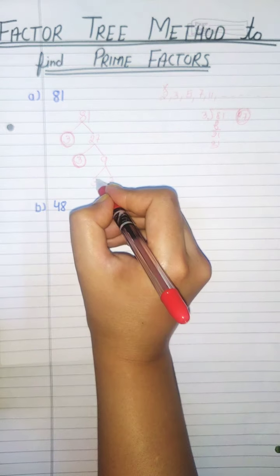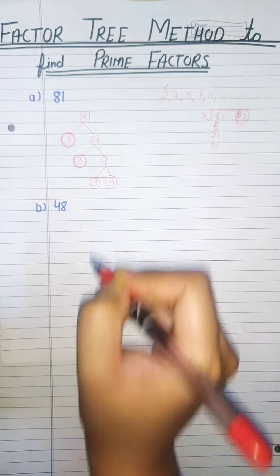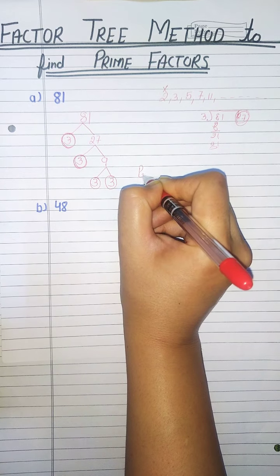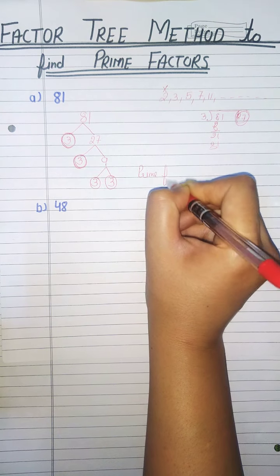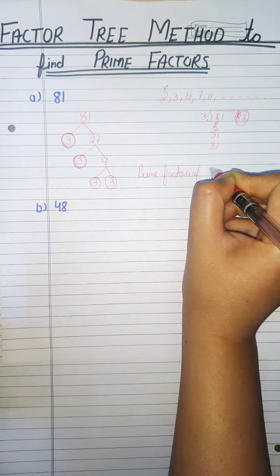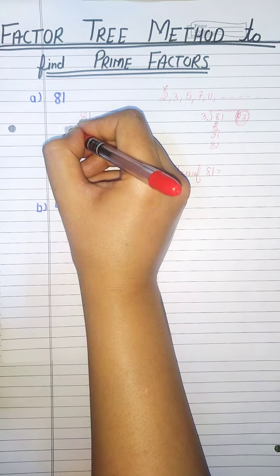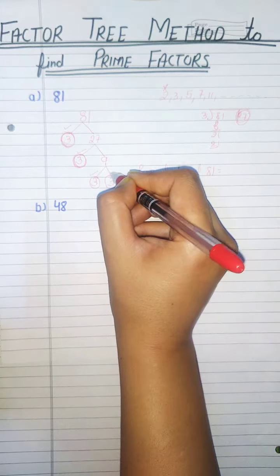3 times 3 is 9, and they are also prime numbers. So prime factors of 81 are 3, 3, 3, 3, four times 3.